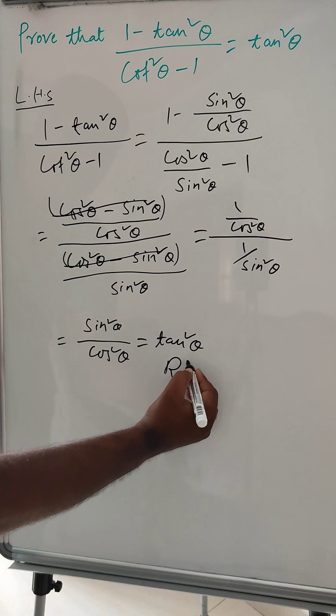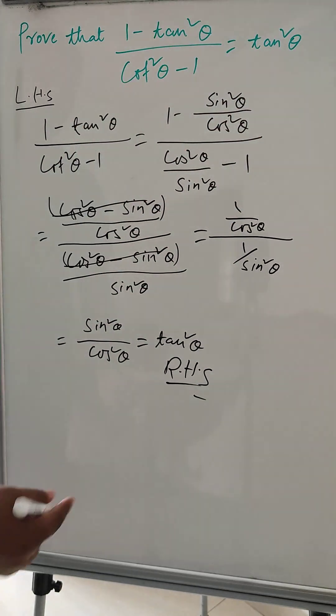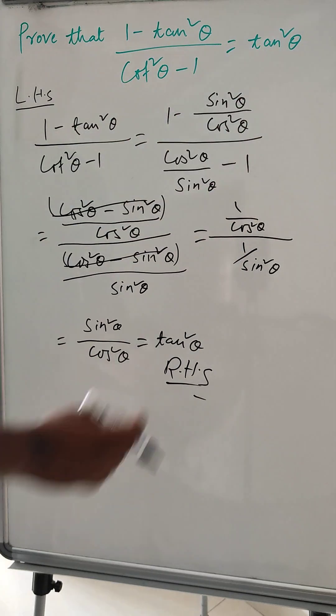Which is RHS. So hence proved, tan square theta.